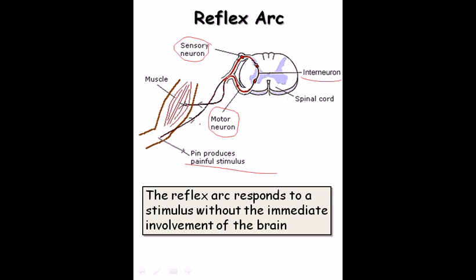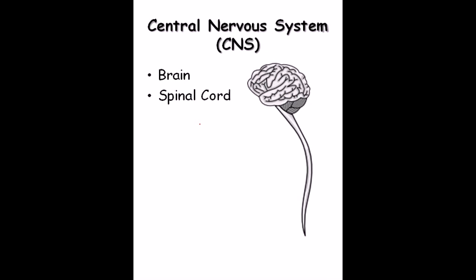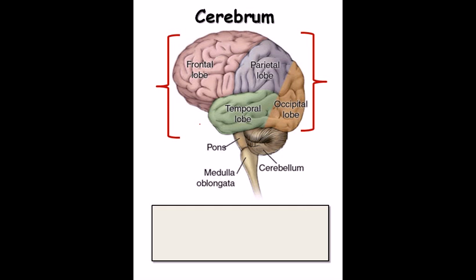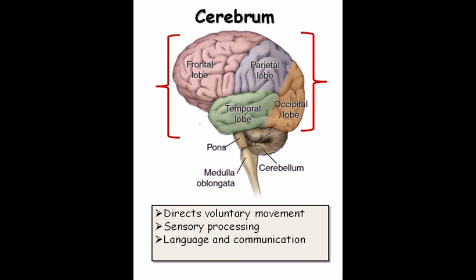The central nervous system consists of two parts: the brain, which is the most important part, and the spinal cord, which carries all the neurons and nervous system along the back. The brain is made up of the cerebrum and the cerebellum. The cerebrum is the most important and larger part — it directs voluntary movements, handles sensory processing, and manages language and communication. The cerebrum consists of different regions: the frontal lobe, parietal lobe, temporal lobe, and occipital lobe.